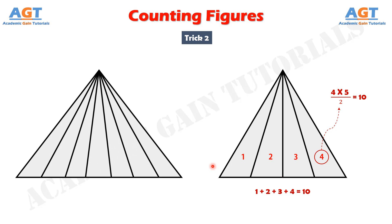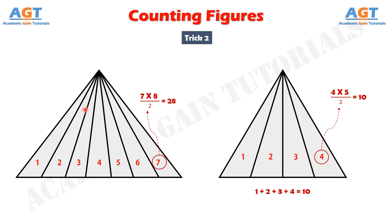Let's practice one more. How many triangles are there in this figure? Serially number each of the internal triangles: 1, 2, 3, 4, 5, 6, and 7. Take the last digit, which is 7, then take the immediate next number after 7, which is 8. Multiply 7 and 8 to get 56, then divide by 2, so we get 28. Total number of triangles here is 28. If you had added 1 through 7 serially, you would get the same result of 28.